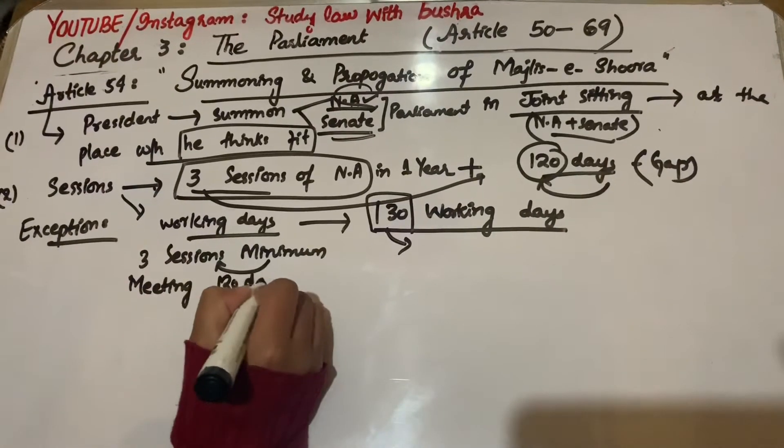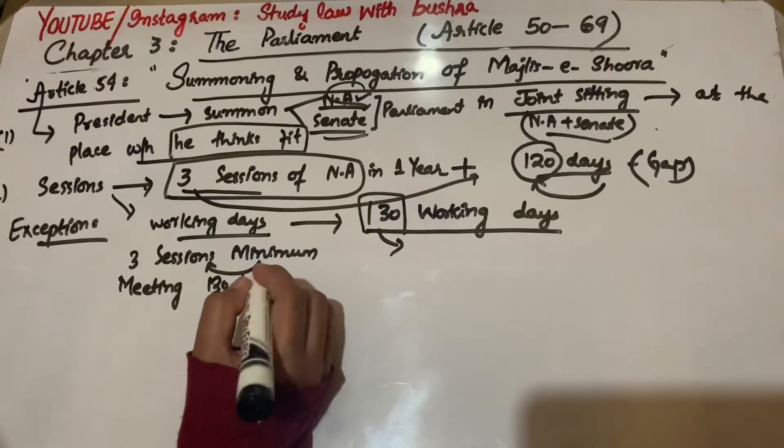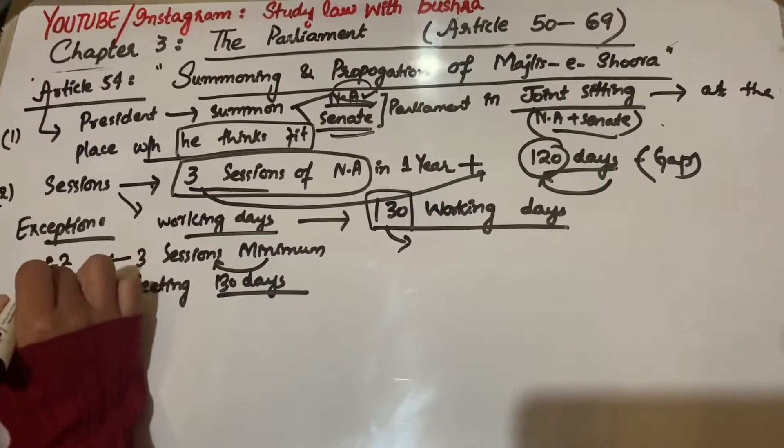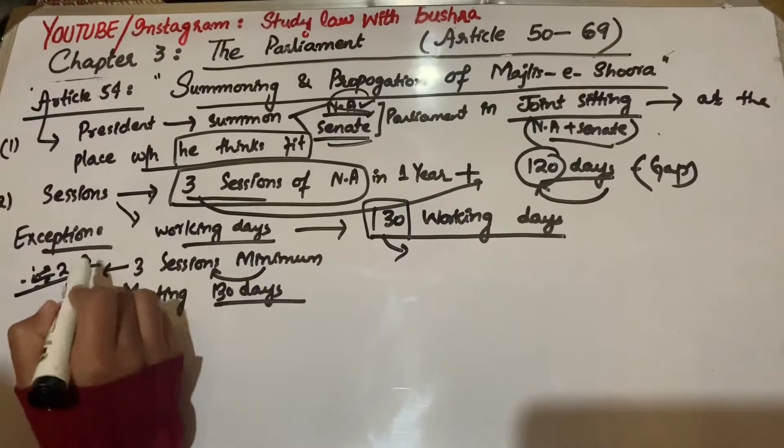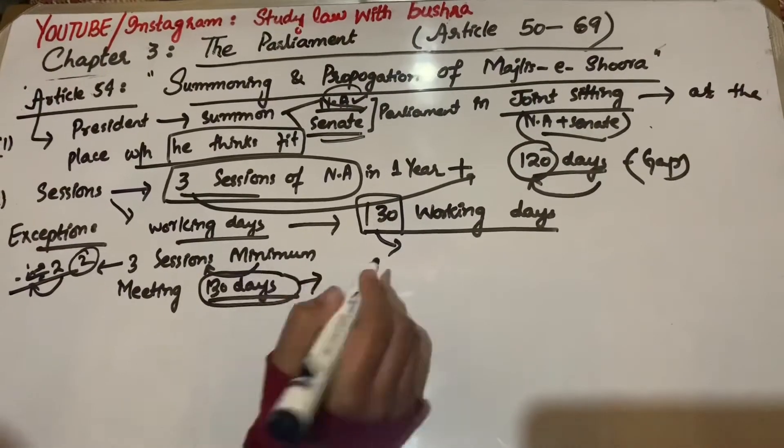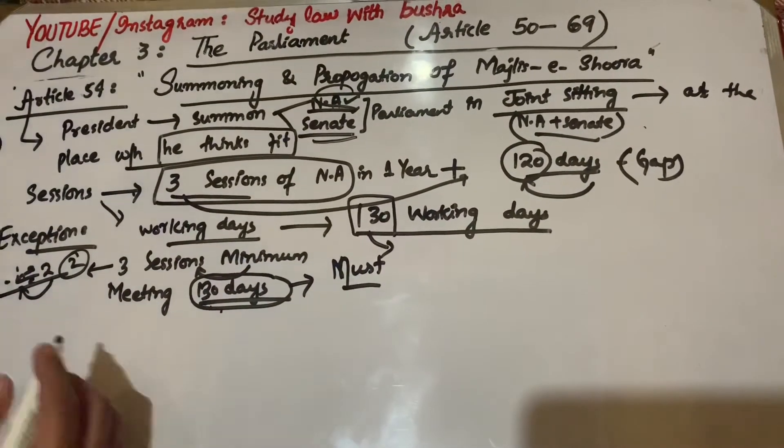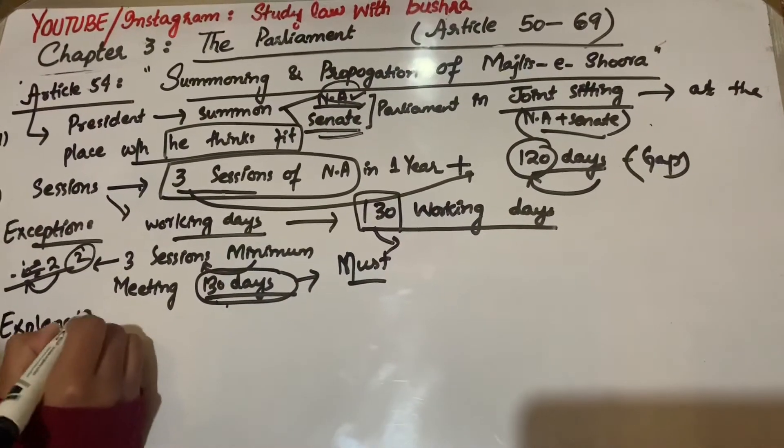First it was mentioned that at least 3 sessions should be held every year, then it explained that they should work within approximately 130 working days. Now, one session can run for two months or three months, or more than three days.